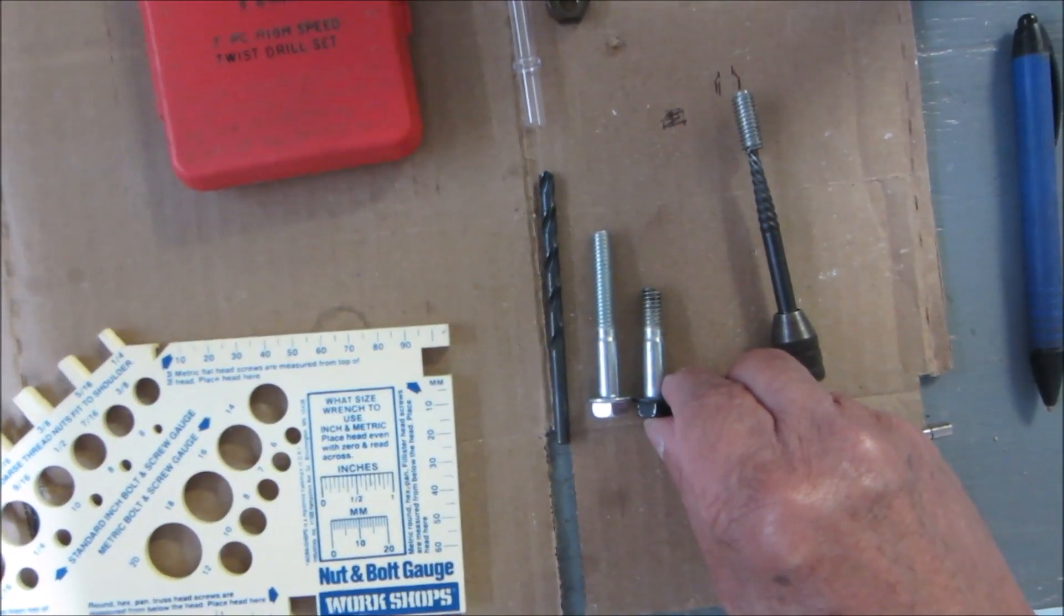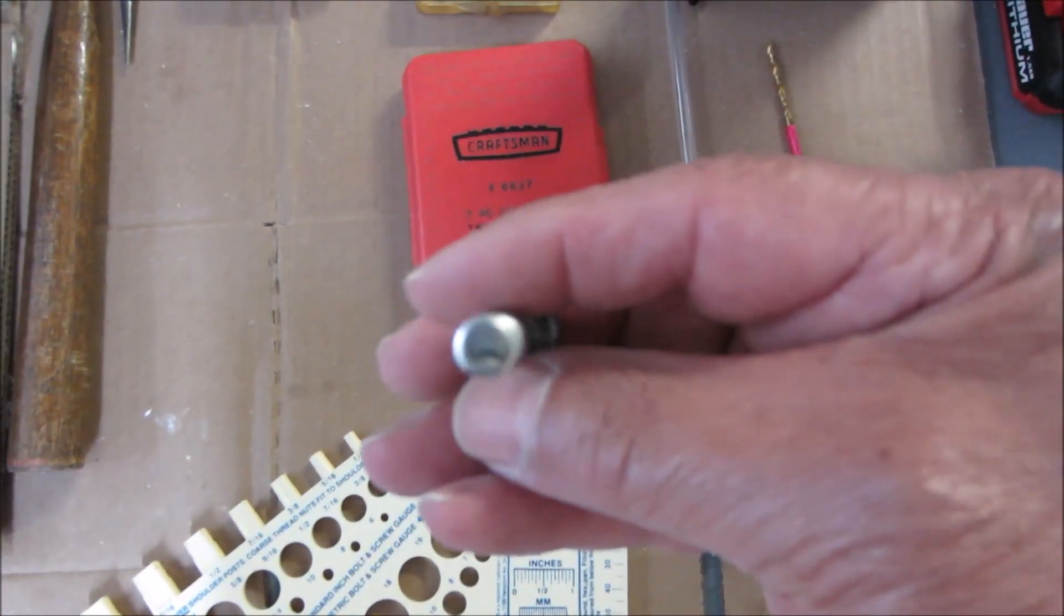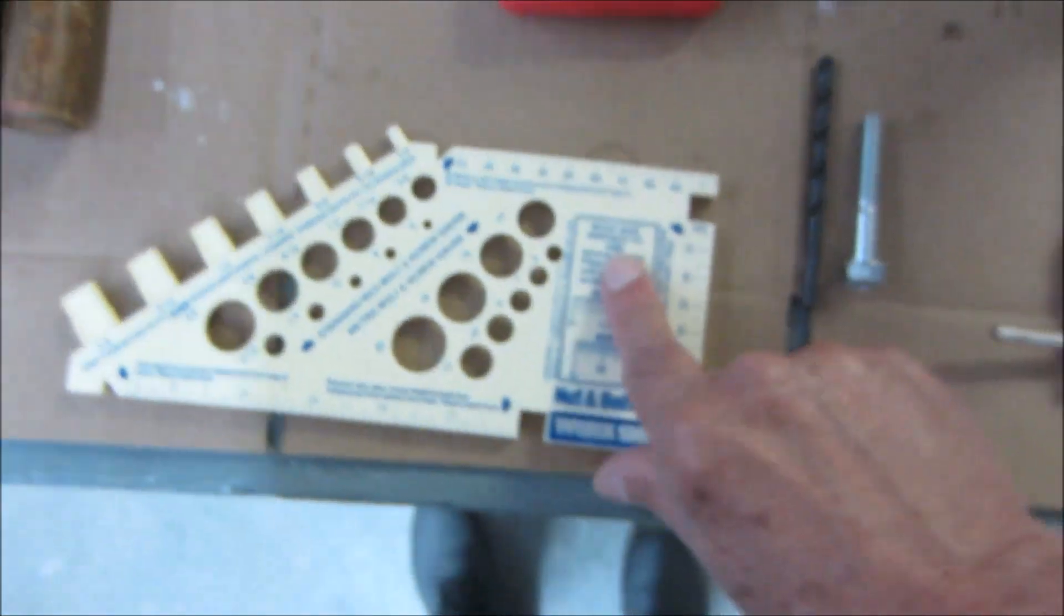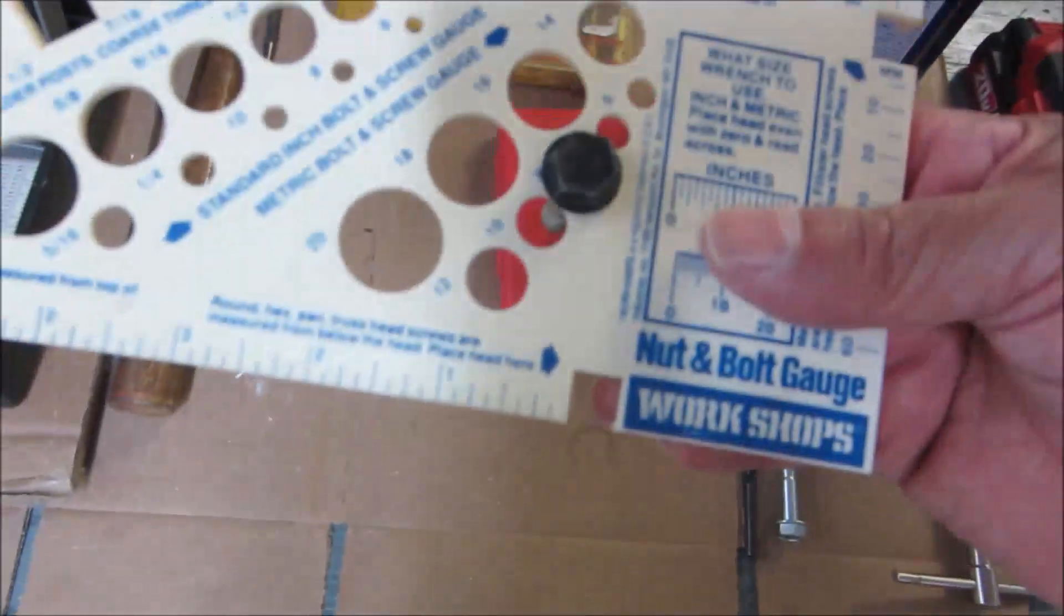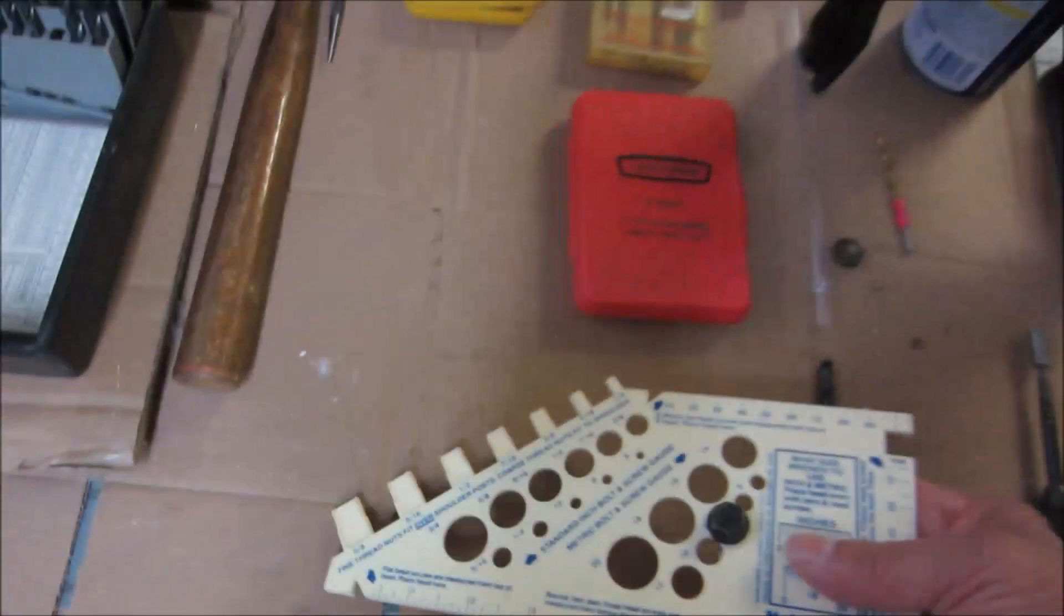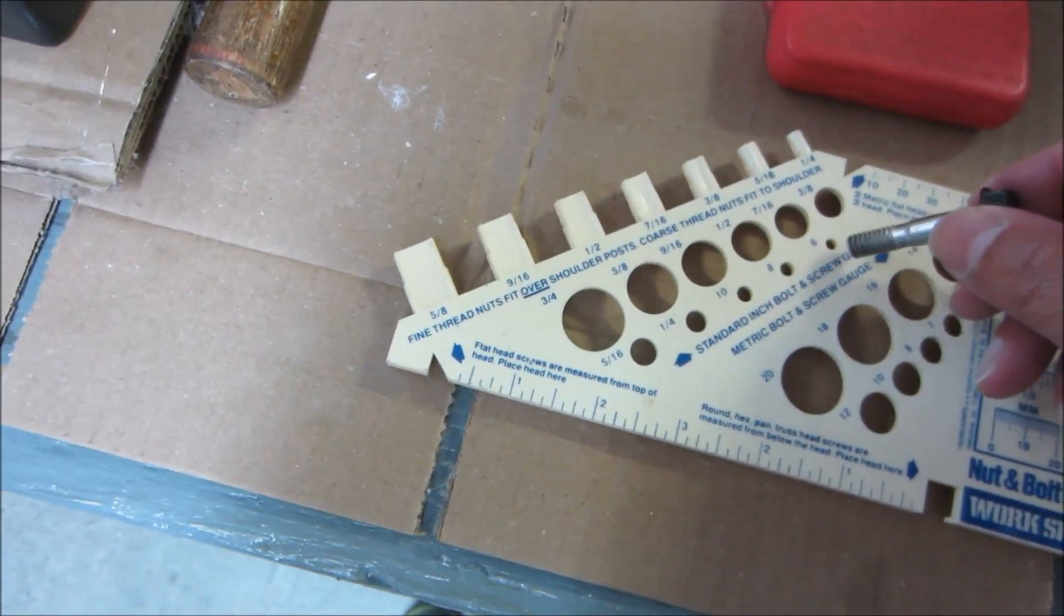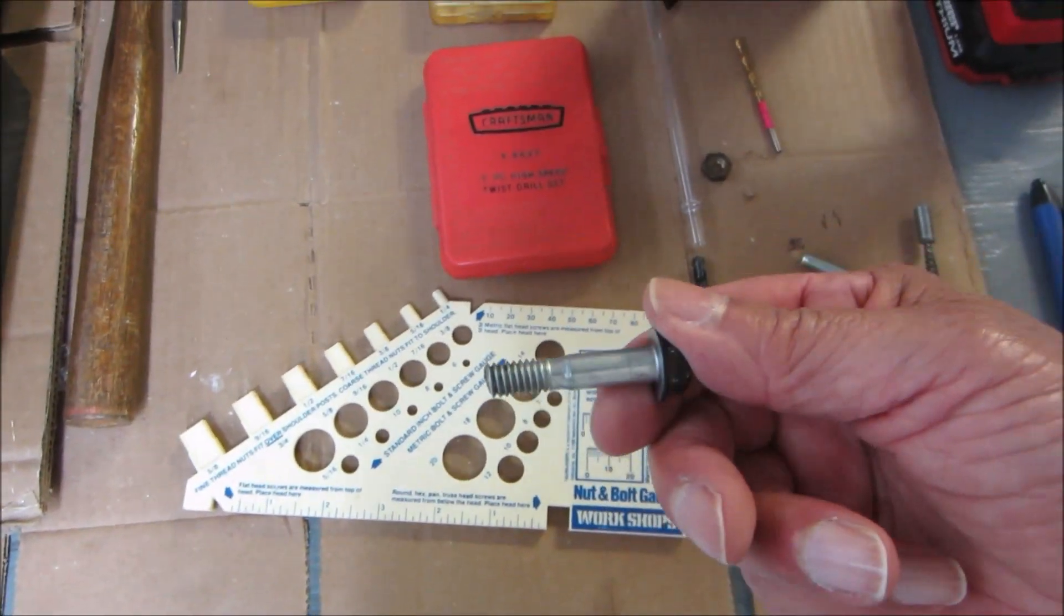So the first thing we need to do is identify the diameter of this bolt. Here I have a gauge. It fits in the number eight hole which is the same as five-sixteenths. So we have a five-sixteenths inch diameter hole also known as a metric eight millimeter.